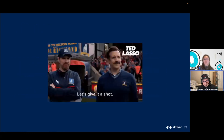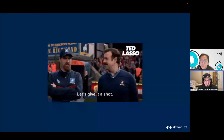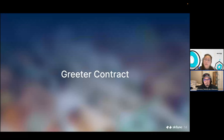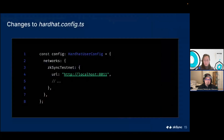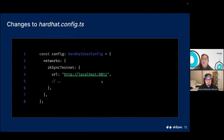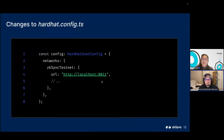Now I want to walk you through how to use the in-memory node and all its different features. Let's start with how to use it with a Greeter contract using Hardhat. In your Hardhat config, update the URL and point your network URL to http://localhost:8011. Let's get into the demo.